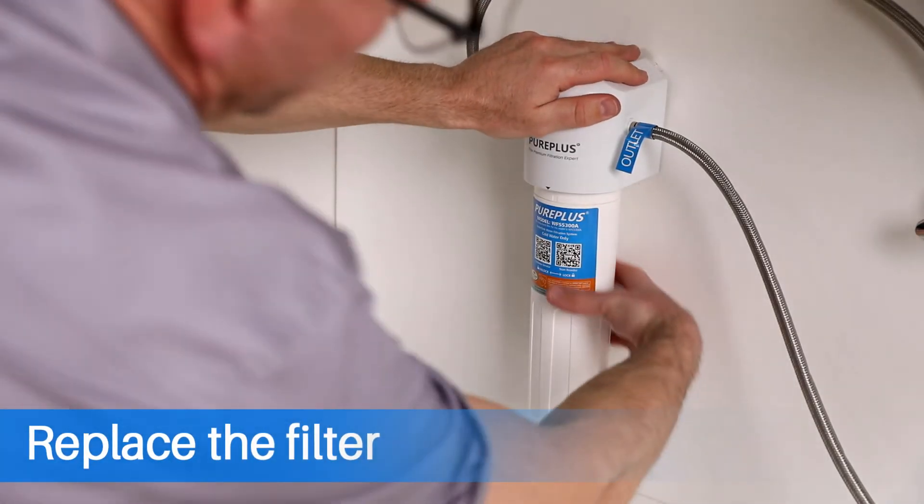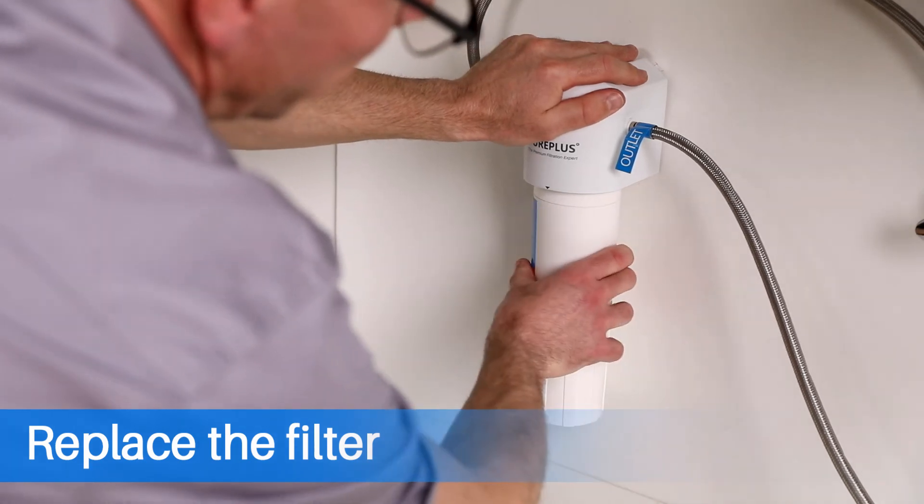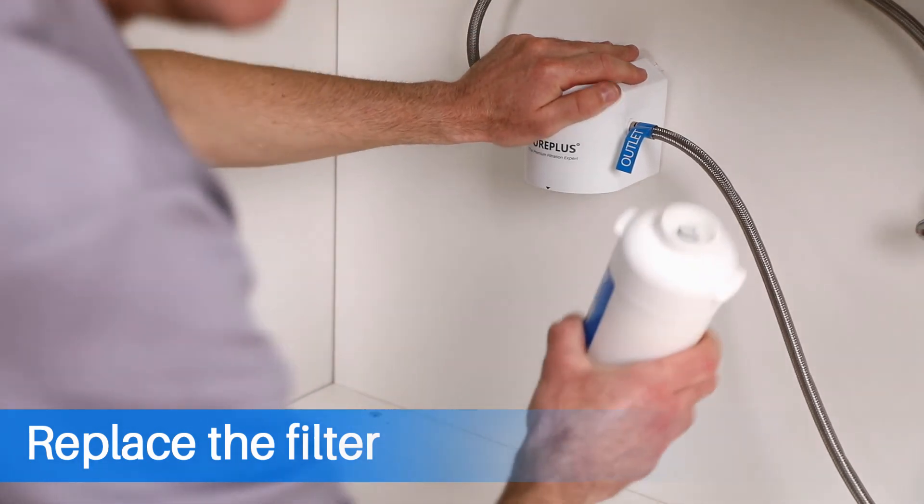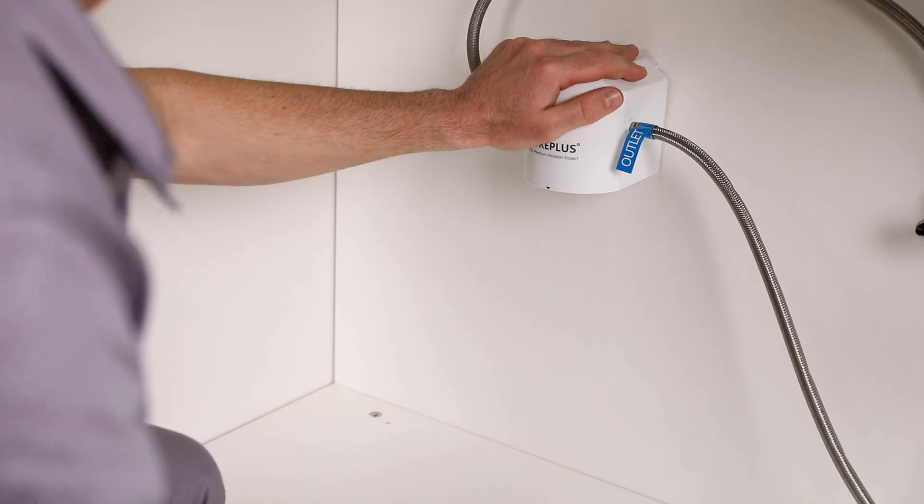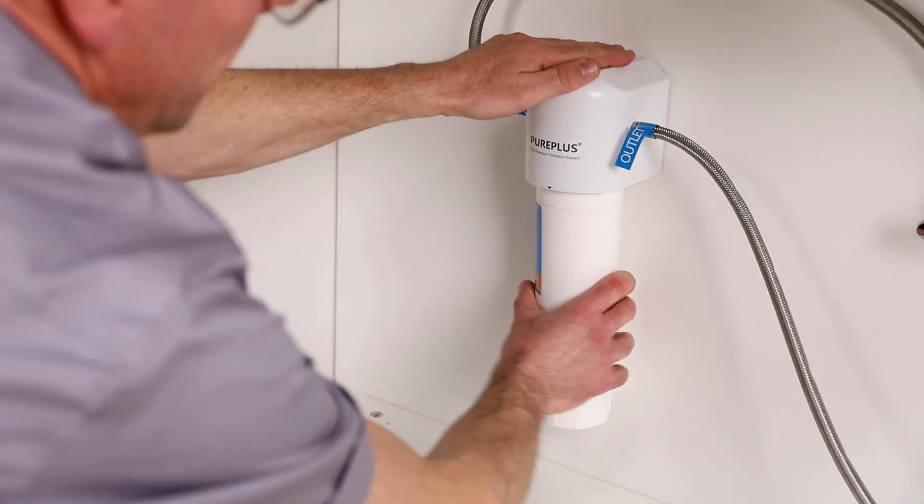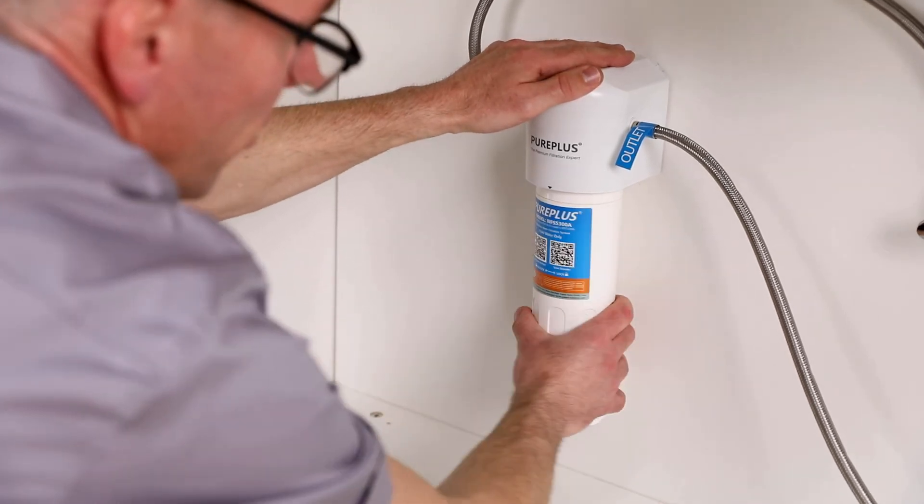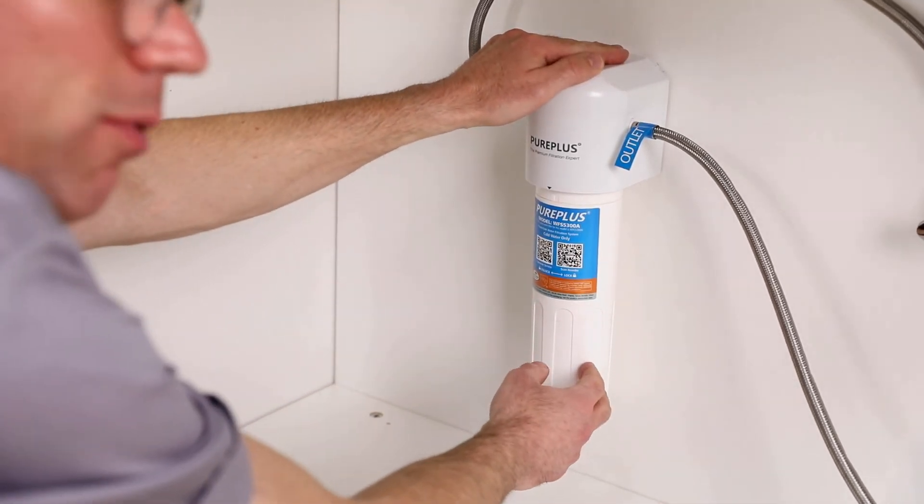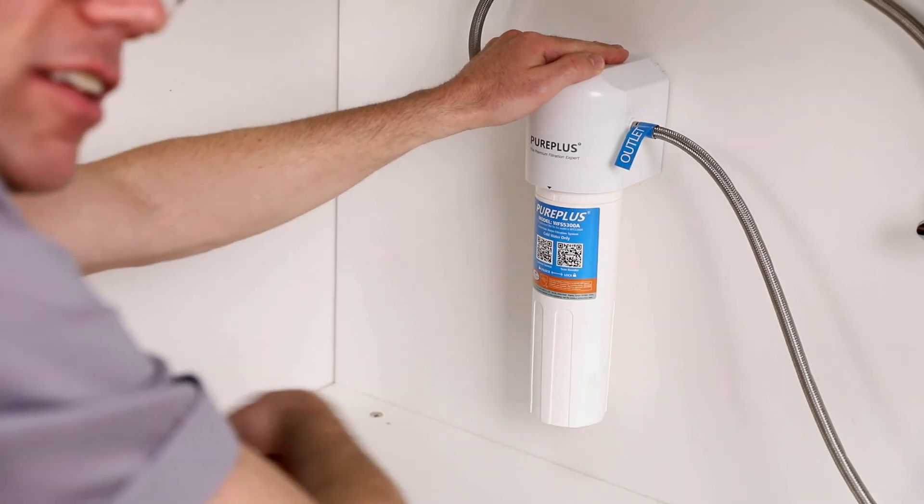When the filter needs to be replaced, hold the filter head with your hand. Turn the filter about a quarter turn to the left to release it. Then remove the old filter. When installing a new filter, align, insert, and twist the new filter to the right about a quarter turn to complete the installation.